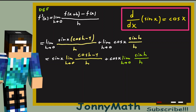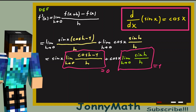Now we're almost done — we just need the values of these two limits. These are very famous limits: the first one equals 0, and the limit as h approaches 0 of sine of h over h equals 1. So we get sine of x times 0 plus cosine of x times 1, which equals cosine of x. So we've finally demonstrated that the derivative of sine of x is actually cosine of x.